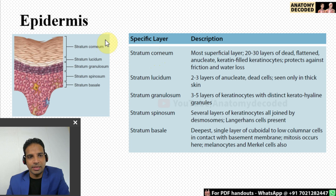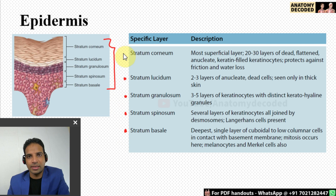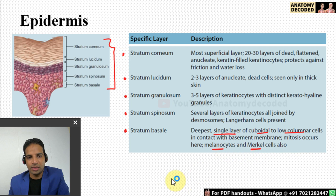Let us cover the epidermis in detail. There are five layers in the epidermis described from below upwards: stratum basale, stratum spinosum, stratum granulosum, stratum lucidum, and stratum corneum. Stratum basale is a single layer of cuboidal or low columnar cells in contact with the basement membrane; it also has Merkel cells and melanocytes. Stratum spinosum has keratinocytes joined by desmosomes, and Langerhans cells are also present here. There is a separate slide for the various cell types in the epidermis, which we will cover later.